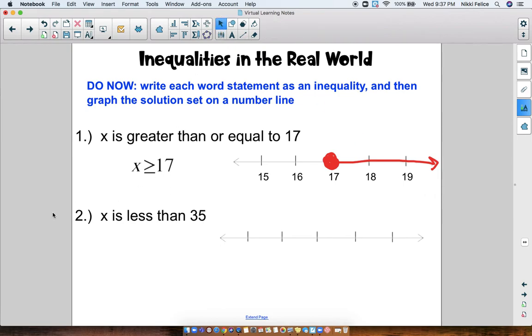For number two, X is less than 35. Your inequality should look like this. The numbers on your number line should be something like this: 33, 34, 35, 36, 37. So now when we graph it, X is less than 35. It cannot be equal to 35 so we don't color it in. We only circle 35. And less than would be 34, 33 and all of these numbers. So X could be any of those numbers lower than 35.